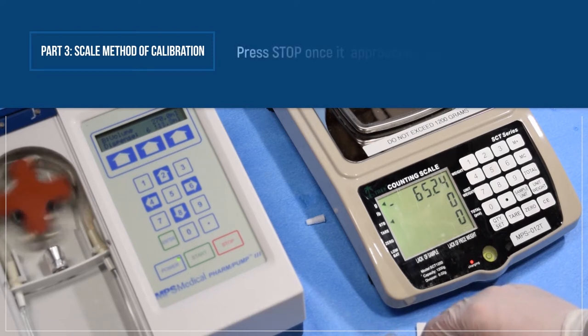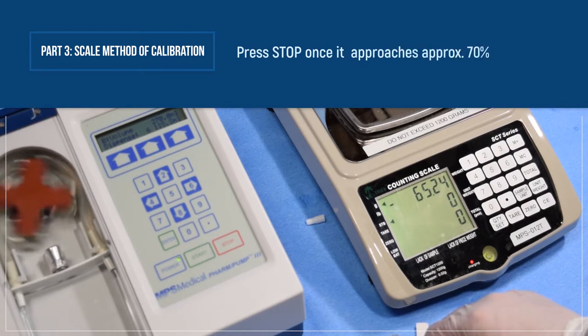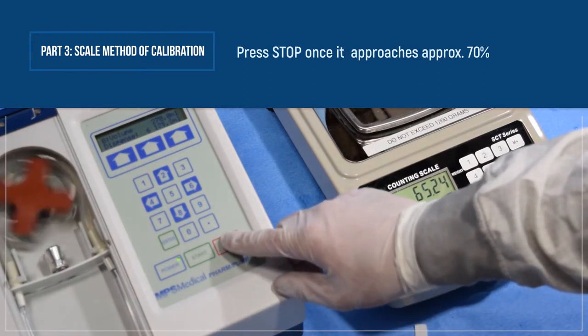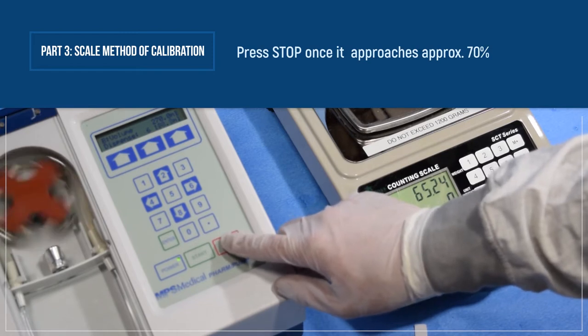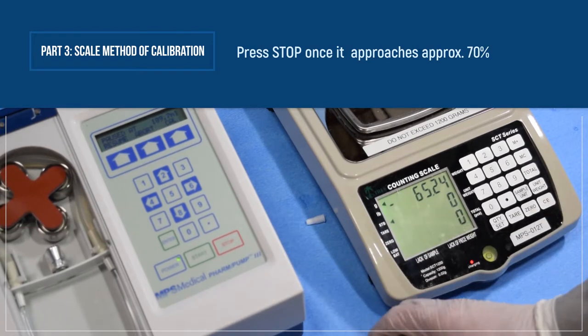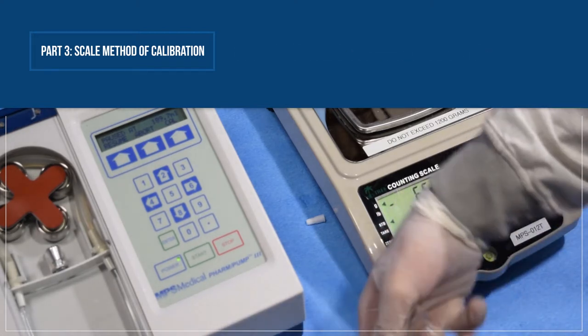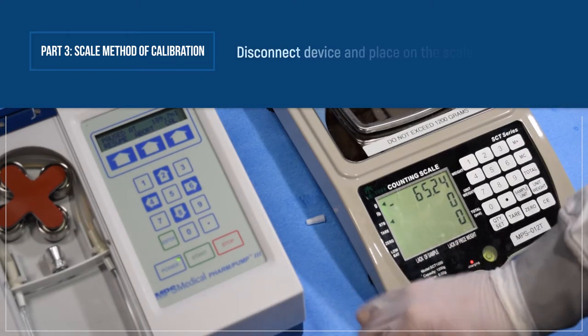Press stop once the total target fill reaches approximately 70%. Disconnect the device and place it back on the scale. Assume 1 gram is equal to 1 mL of volume dispensed.